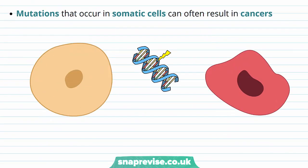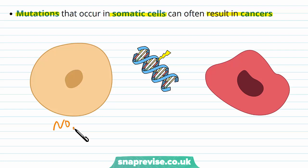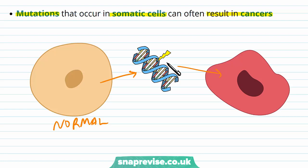The problem with mutations which occur in somatic cells is that they often result in cancers. If we have a normal cell — for example, a normal skin cell — and it undergoes a mutation during its replication, then that cell can often become cancerous.